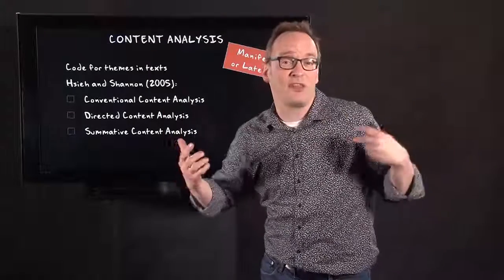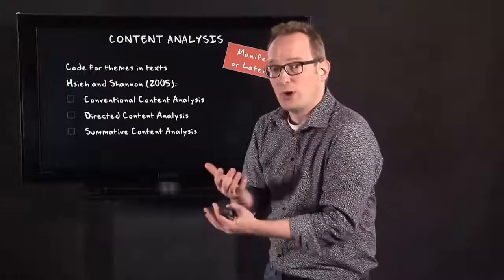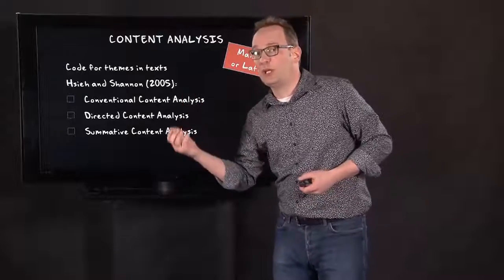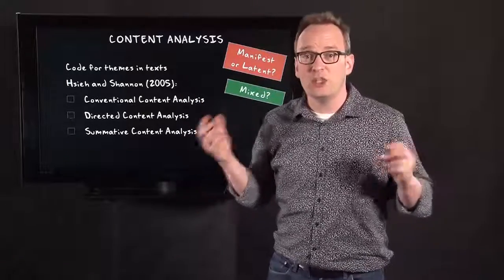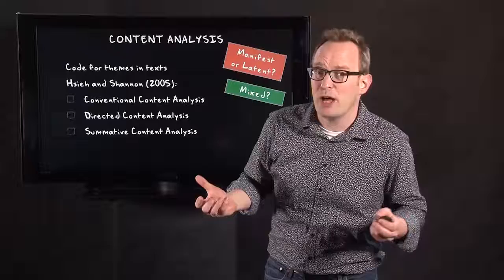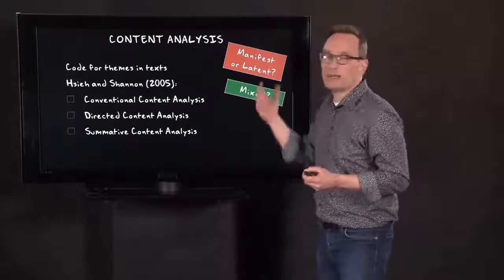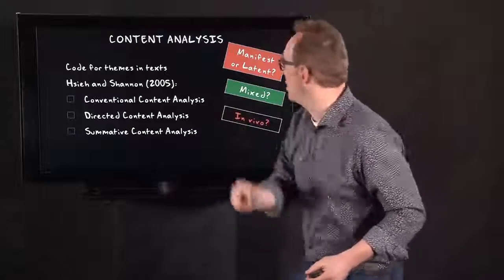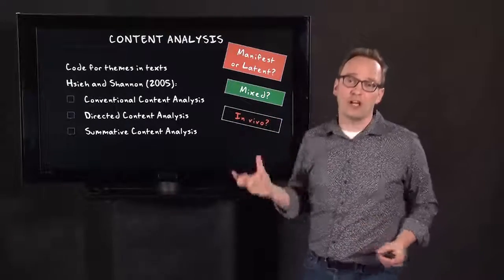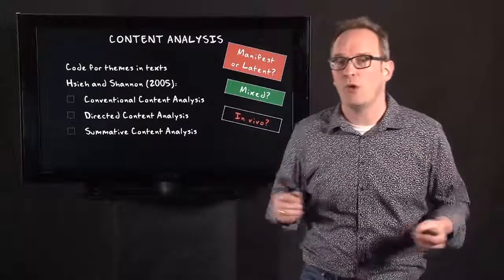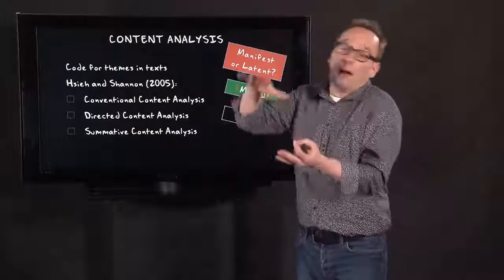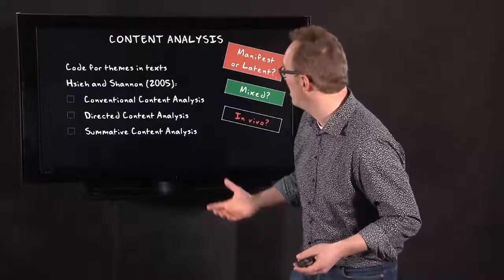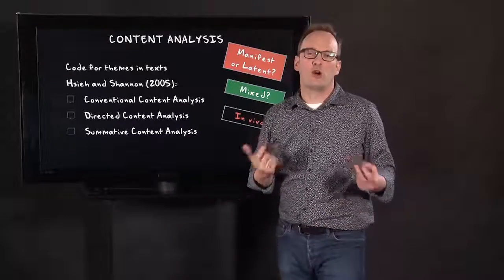Are these themes more manifest or more latent? So can I read them directly or do I need to read between the lines? Or do I need to combine it, a little bit of both? And if I look at manifest meanings and manifest themes, do I need to code them exactly as they're worded, so code in vivo, or can I use more abstract codes? These are aspects you have to think about when doing any form of content analysis.